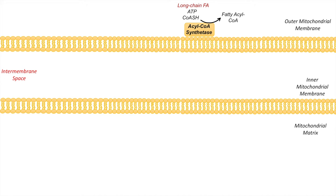Once we have the fatty acyl-CoA, it can be acted on by an enzyme located within the outer mitochondrial membrane known as CPT1, or carnitine palmitoyl transferase 1. What this does is it removes the CoASH from the fatty acyl chain and adds a carnitine to the fatty acyl chain. This allows it to enter into the intermembrane space.